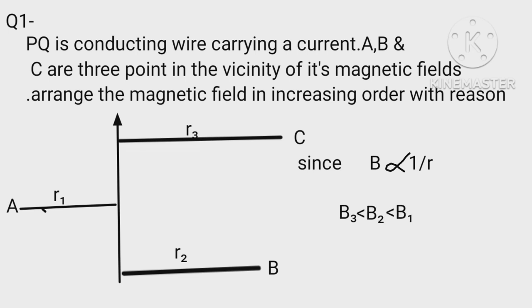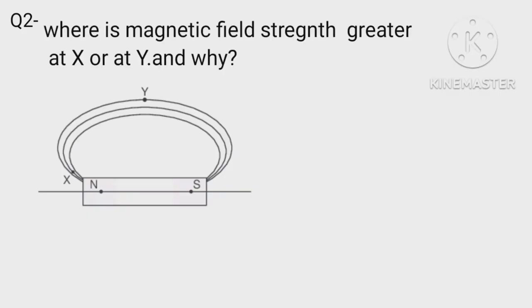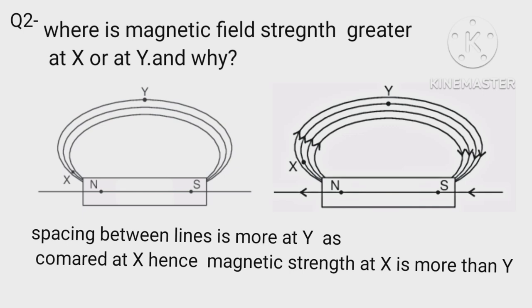Where is magnetic field strength greater at X or at Y and why? Spacing between the lines is more at Y compared to X, hence magnetic strength at X is more than at Y.